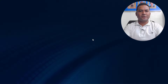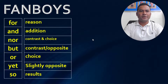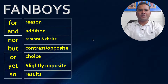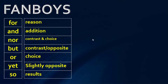Now let's go deeper to study about FANBOYS. We have: for, and, nor, but, or, yet, and so. Here is how we use each of them — 'for' is used for reason, 'and' is used for addition, 'nor' is used for contrast and choice, 'but' is used for contrast and opposite, 'or' is used for choice, 'yet' is used for slightly different or slightly opposite, and 'so' is used to talk about results.